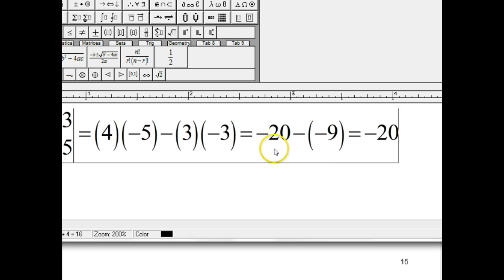So it's 4 times negative 5 minus 3 times negative 3 equals negative 20 minus negative 9. Negative 20 minus negative 9 is negative 20 plus 9, which equals negative 11.